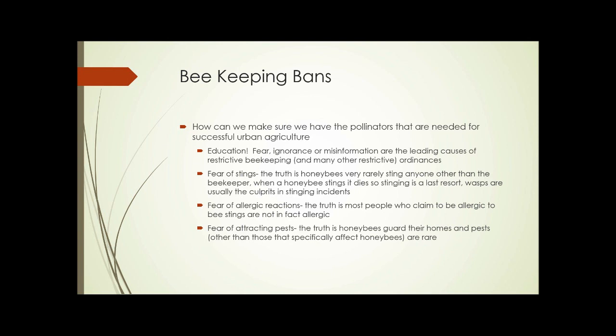Let's take a quick look at beekeeping bans. We need pollinators for successful agriculture — not just urban agriculture, but any agriculture. How do we make sure we have the pollinators necessary for successful urban agriculture? First and foremost: education. Fear, ignorance, or misinformation are the leading causes of restrictive beekeeping and many other restrictive ordinances. People are afraid of being stung, but the truth is honeybees very rarely sting anyone other than the beekeeper. When a honeybee stings, it dies, so stinging is a last resort.